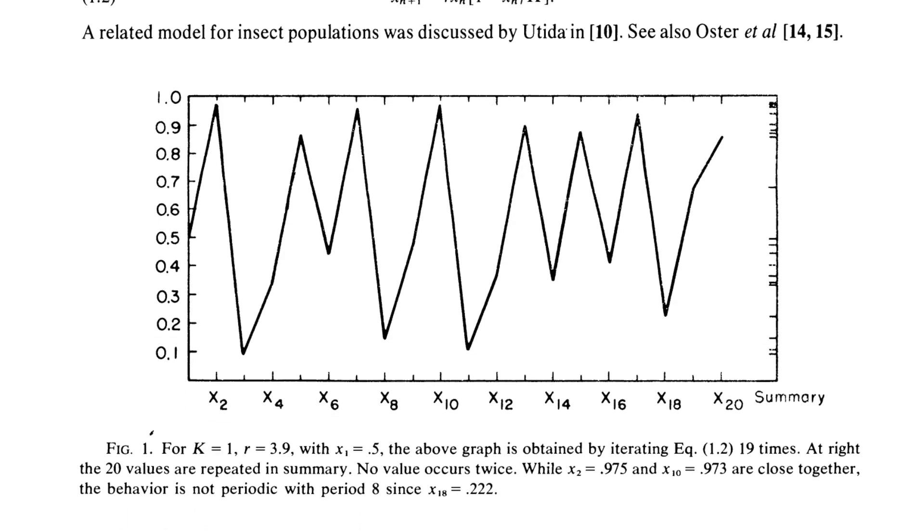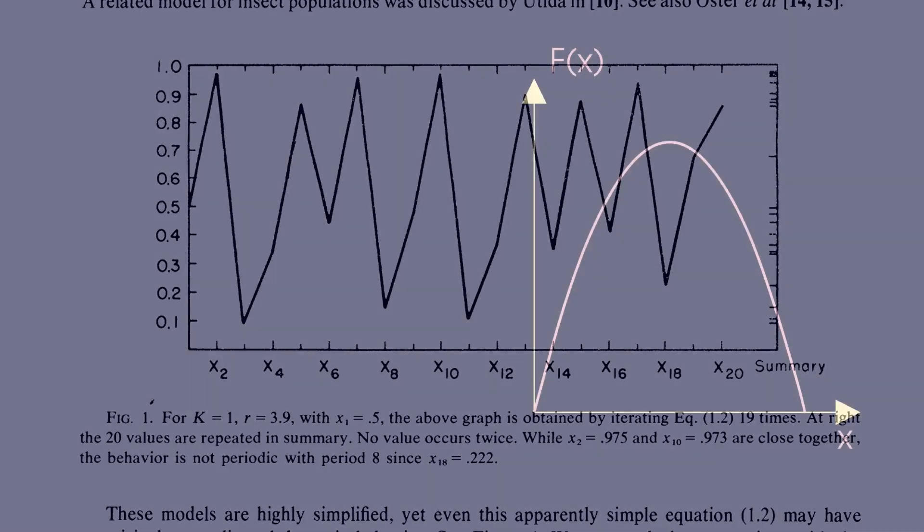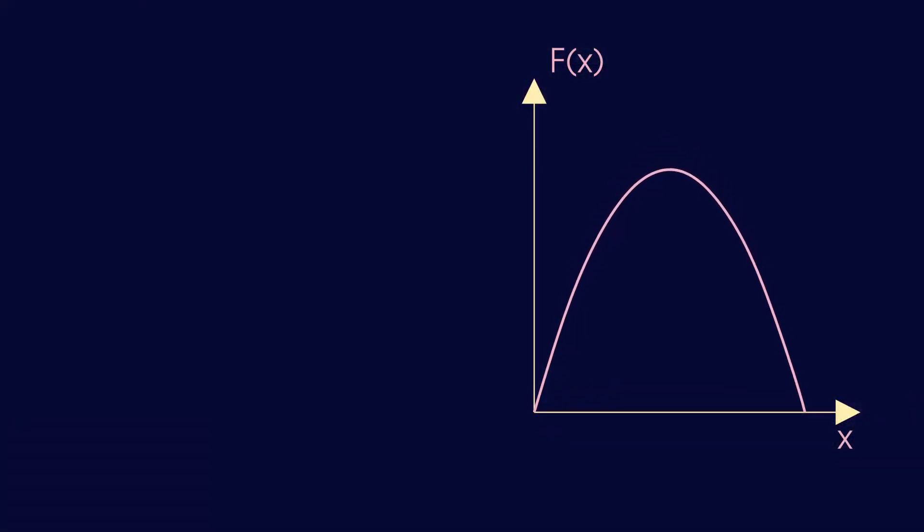Lee and York showed that it doesn't matter if the update function of the iteration is the logistic map or a different function. As long as the update function is such that a solution with period 3 exists, then there will be chaos.